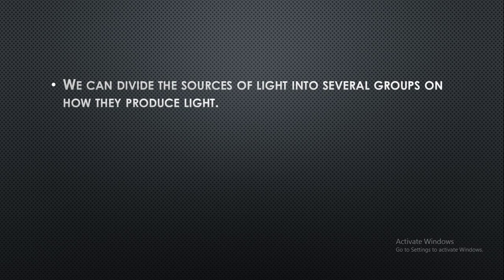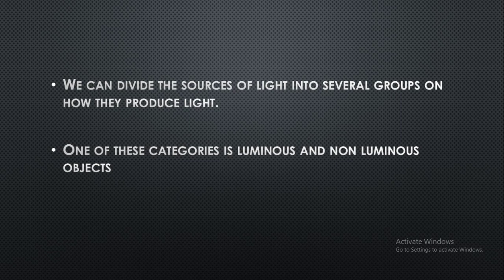We can divide the sources of light into several groups based on how they produce light — whether they produce light, whether they reflect light, or whether they are not capable of emitting light — and based on their physical features.